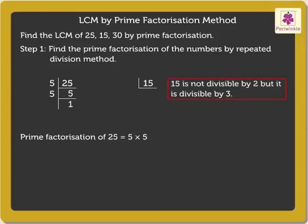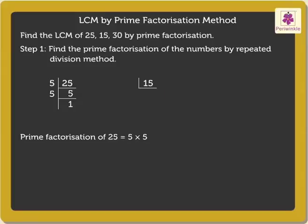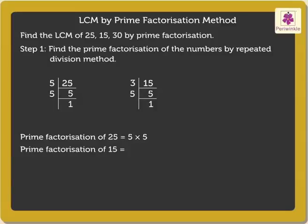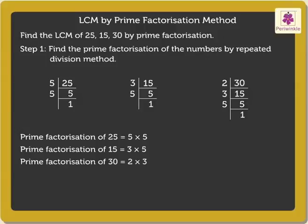Now we find the prime factors for the next number 15. We know 15 is not divisible by 2, so we take the next prime number, that is 3. Dividing 15 by 3, we get the quotient 5. Since 5 is a prime number, the next smallest prime number which can divide it is 5. Therefore, we divide 5 by 5, which equals 1. So the prime factorization of 15 is 3 × 5. Similarly, we find the prime factorization of 30 as 2 × 3 × 5.